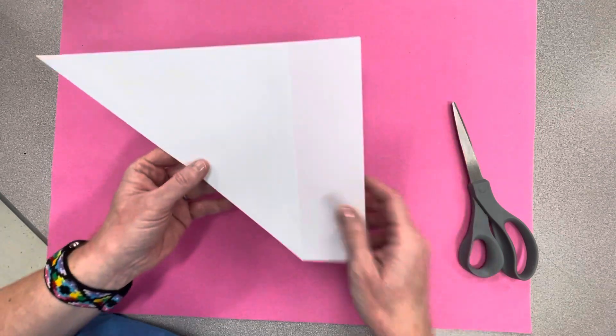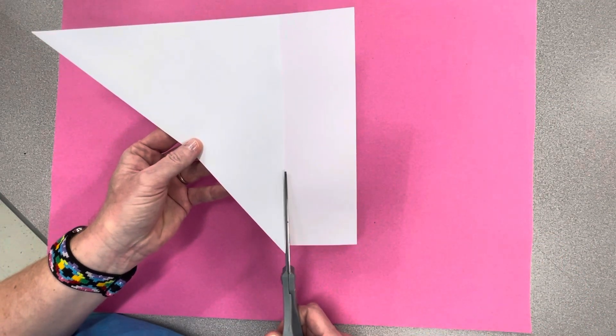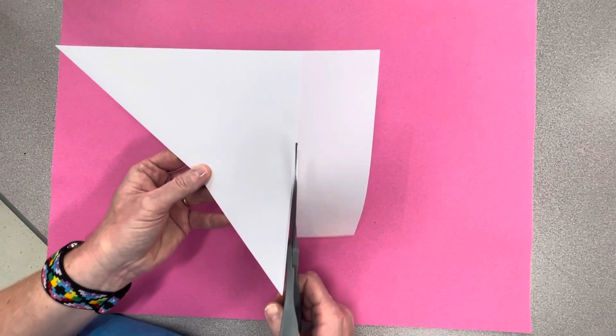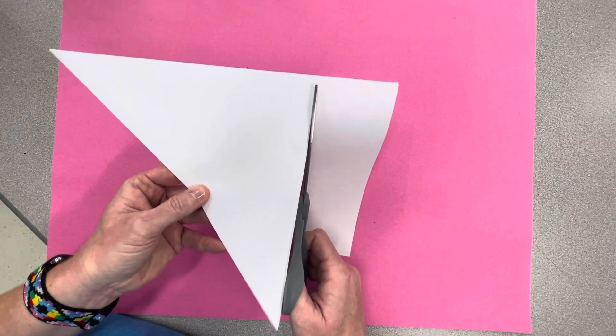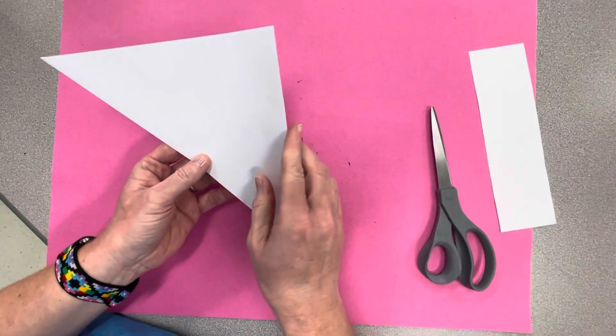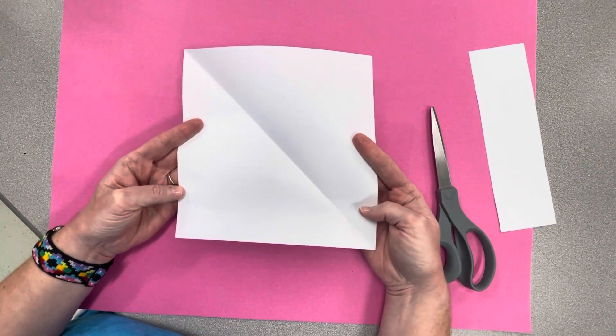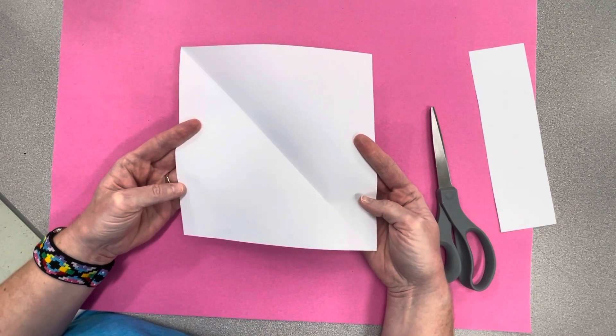So all we're going to have to do now is trim off that rectangle. Just cut slowly and neatly. This is trash. And then when you open this up you will have your square paper and you are ready to do your origami.